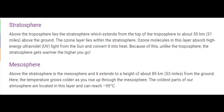Above the stratosphere is the mesosphere, which extends to a height of about 85 kilometers, or 53 miles, from the ground. Here, the temperature grows colder as you rise up. The coldest parts of our atmosphere are located in this layer, and temperatures can reach up to minus 90 degrees centigrade.